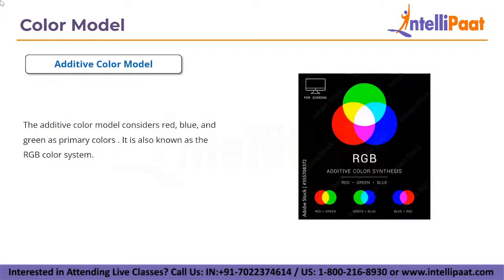The additive color model consists of red, blue, and green as primary colors, so it is also known as the RGB color system. This model is the basis of all colors used on screen. The combination of primary colors in equal proportions produces secondary colors, which are cyan, magenta, and yellow.